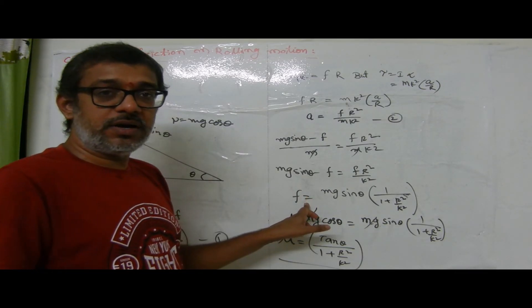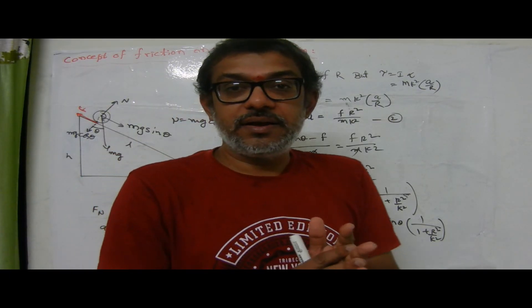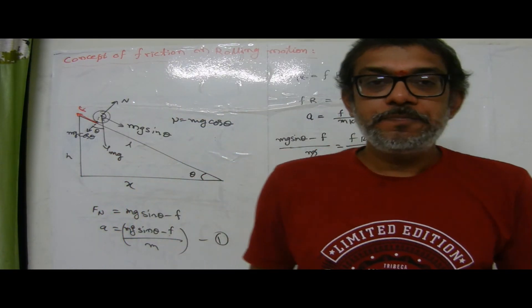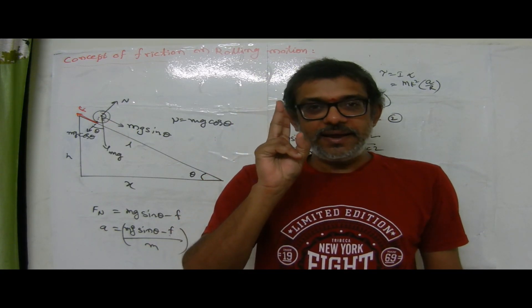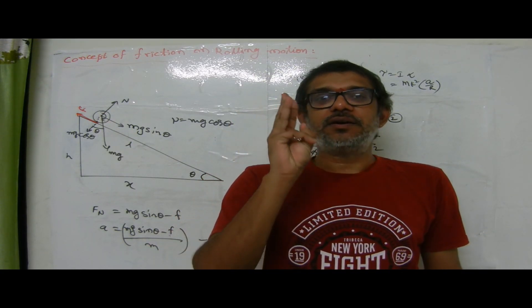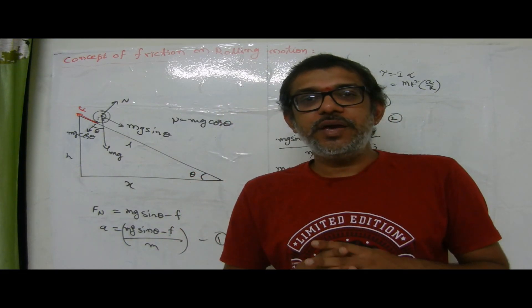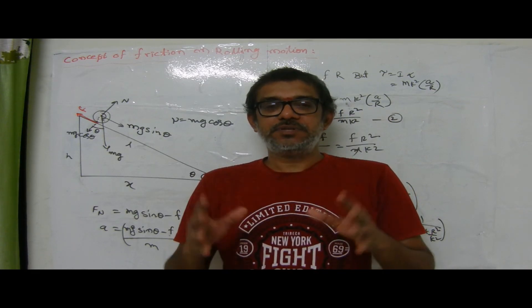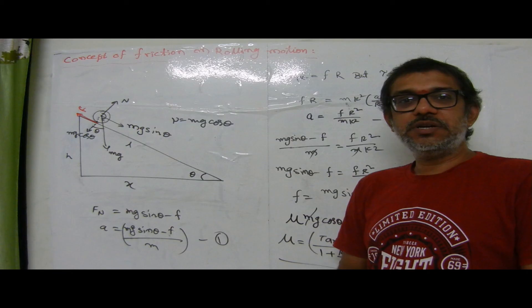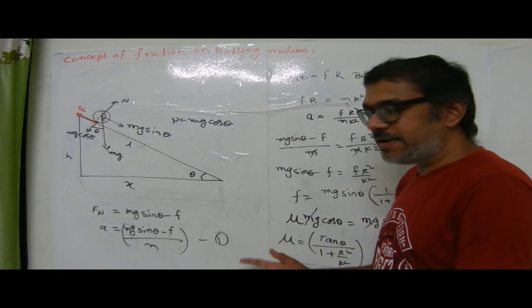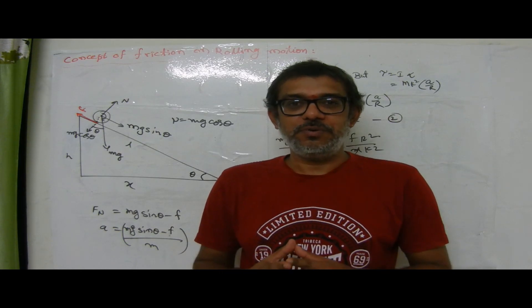This is the final conclusion for rolling motion. To recap, the major topics covered in this series are: moment of inertia, angular momentum, torque and mechanical equilibrium, and rolling motion. This last part covered friction over the rolling surface. Maximum practice is recommended on rotating motion problems. Best wishes to all students.